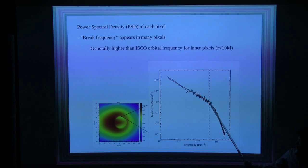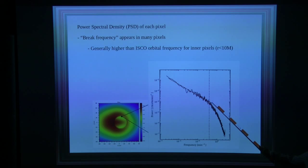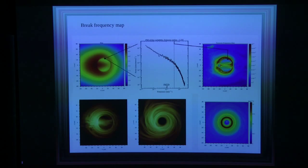What's interesting is that there is a frequency at which the PSD breaks. This break frequency appears in many pixels. In general, the shape of the PSD has a slope of roughly minus 1.5 to minus 1, and then after the break, the slope keeps decreasing. Notably, this break frequency is higher than the local orbital frequency. I'll come back to the interpretation of this later.